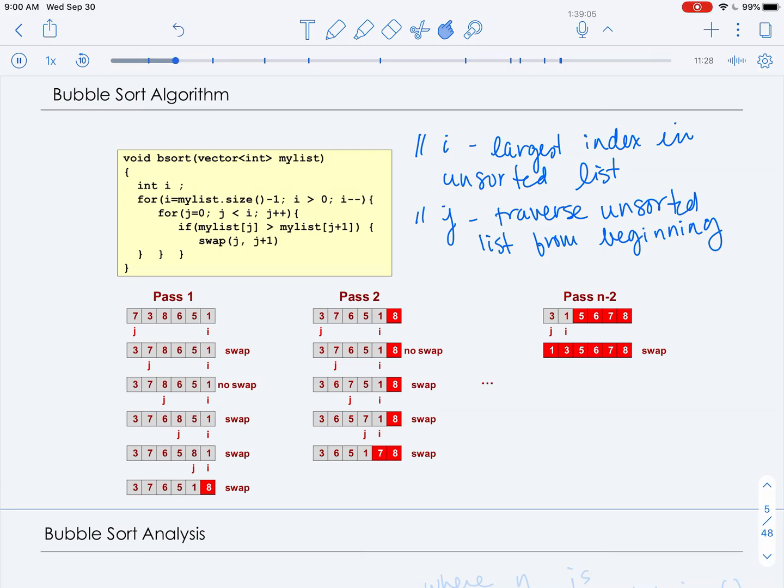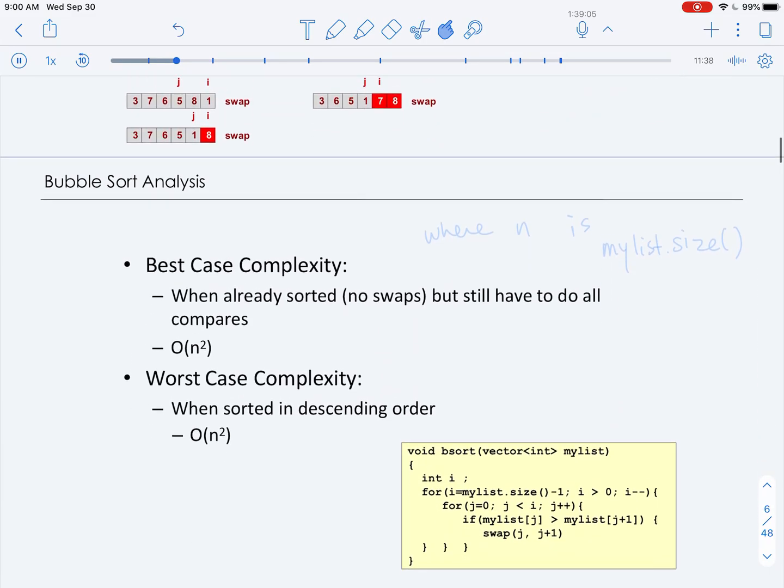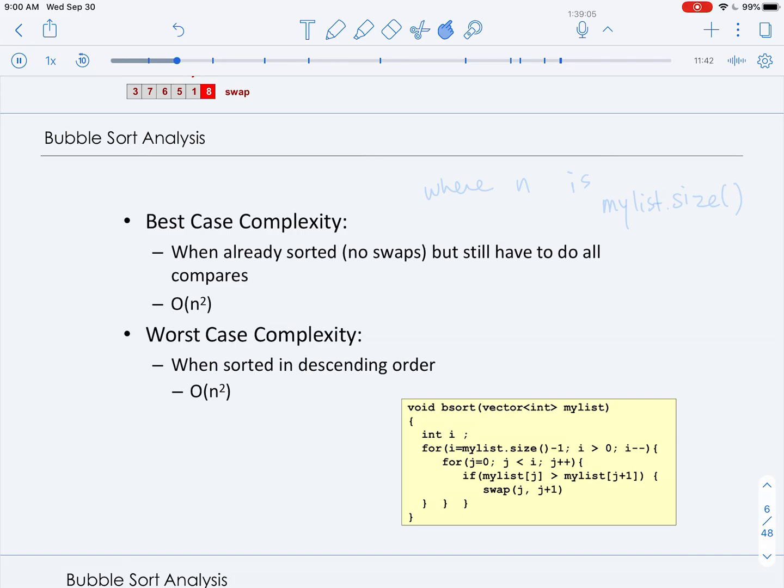So this is the bubbling up by swapping adjacent pairs on each iteration. As you can see, the runtime complexity of bubble sort is not very good. And the best case complexity is when we have to do no swaps, but you'll notice that we still have to do all of the comparisons. So that's going to be O of n squared, where n is my list size, the number of elements on the vector. But we'll notice that the worst case complexity is exactly the same, because you just have to swap all of the adjacent pairs, so it would be significantly slower.